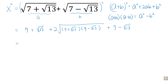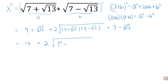These two terms will cancel out. So we have 7 + 7, which is 14. Now we have plus two times √(7 + √13) times (7 − √13). We are going to use the difference of squares relationship. So we have √(7 + √13) times (7 − √13), which gives us 7² − (√13)² = 49 − 13 = 36.